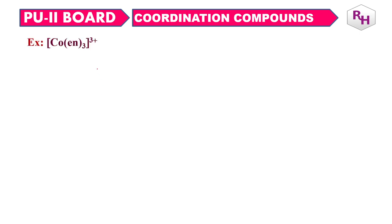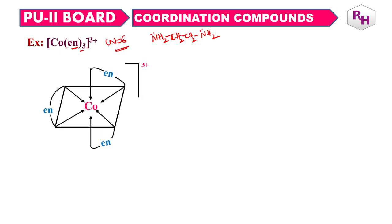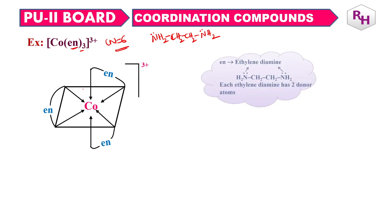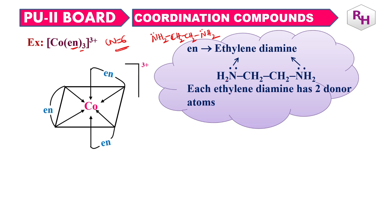Similarly, Co(en)3 3+. En is ethane-1,2-diamine: NH2–CH2–CH2–NH2. Both nitrogen atoms can donate electrons, making it a bidentate ligand — one ligand equals 2 bonds. With 3 en ligands, the coordination number becomes 6. Once en is linked to cobalt, 3 ligands form 6 bonds, hence coordination number equals 6.